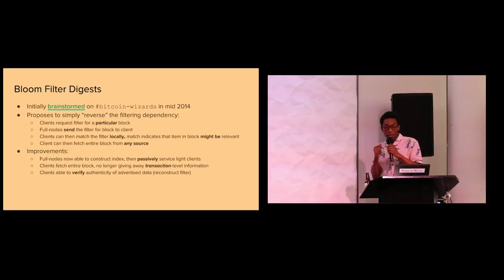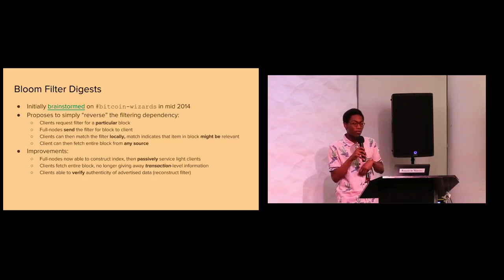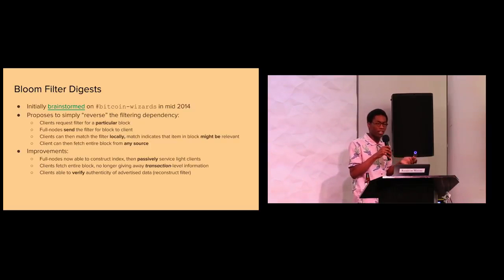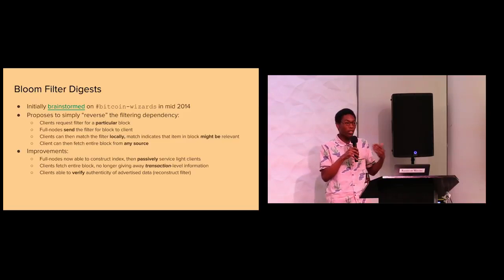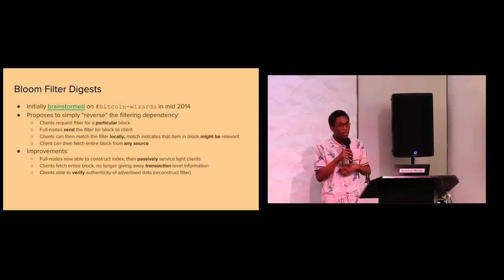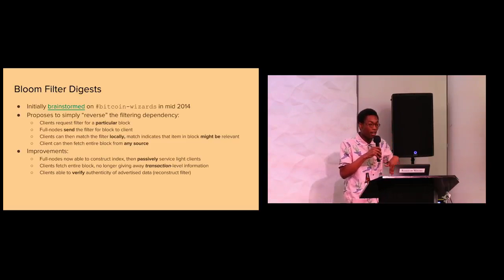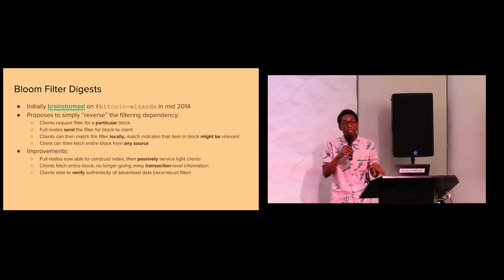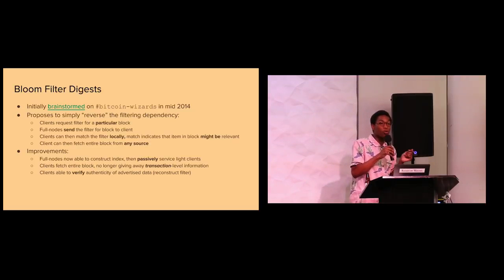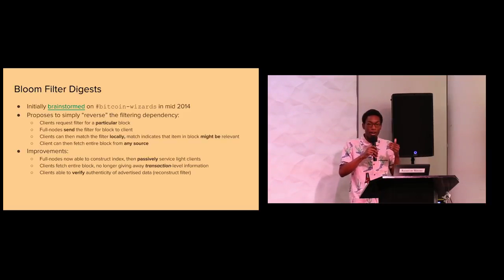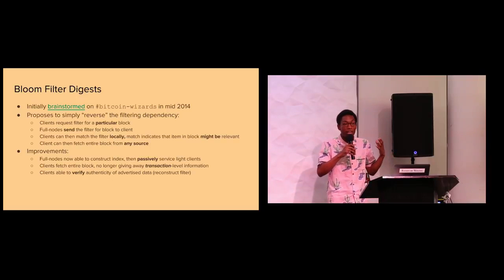That brings us to Bloom Filter Digest — client-side filtering. This was initially discussed on Bitcoin Wizards probably around 2014, where someone came to the channel and asked, what if the full node sent the filter to the client? Everyone thought it was a pretty good idea. Then around 2015-2016, someone posted to the mailing list with a more fleshed-out proposal. The general idea is basically to reverse the dependency: with BIP37 there was server-side filtering, but instead we're going to do client-side filtering. The client requests a filter for a particular block, the full node sends that filter, and now the client has the filter locally and can do whatever it wants with it — store it for later or query it against its addresses.